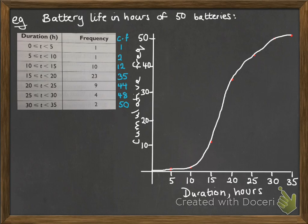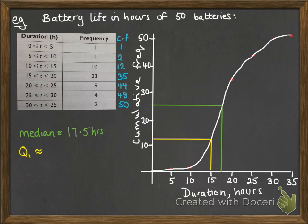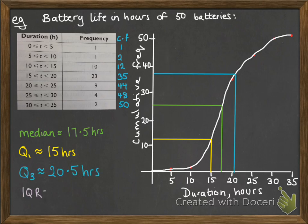Now we can read off a few easy measurements from here. For example, we can get the median. If we've got 50 items of data, we want the 25th one for the median. We can read off that curve and estimate our median to be 17.5 hours. We do the same for the lower quartile and upper quartile, and then we can work out the interquartile range.